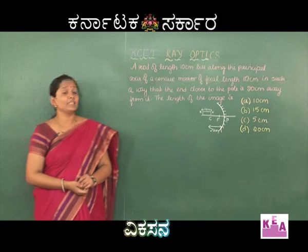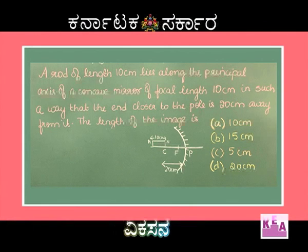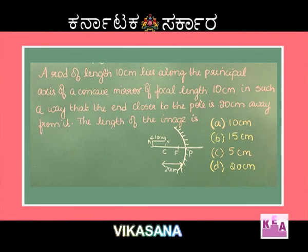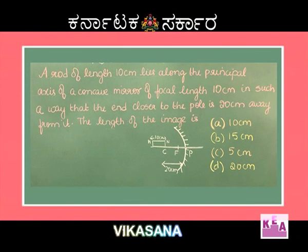Dear students, let's move on to the next problem. A rod of length 10 centimeters lies along the principal axis of a concave mirror of focal length 10 centimeters, such that the end closer to the pole is 20 centimeters away from it. The length of the image is - options: A) 10 cm, B) 15 cm, C) 5 cm, and D) 20 cm.